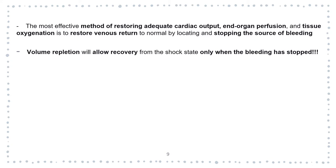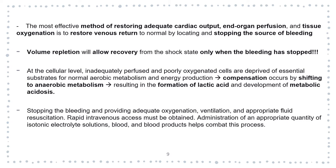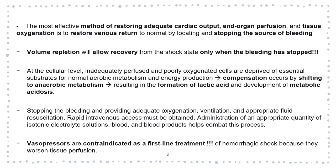The most effective method of restoring adequate cardiac output, organ perfusion and tissue oxygenation is to restore venous return to normal by locating and stopping the source of bleeding. All volume repletion will allow recovery from shock only when bleeding has stopped. At the cellular level, inadequately perfused and poorly oxygenated cells shift to anaerobic metabolism, resulting in lactic acid formation and metabolic acidosis. Stopping the bleeding and providing adequate oxygenation, ventilation and appropriate fluid resuscitation are the first treatment steps for hemorrhagic shock.